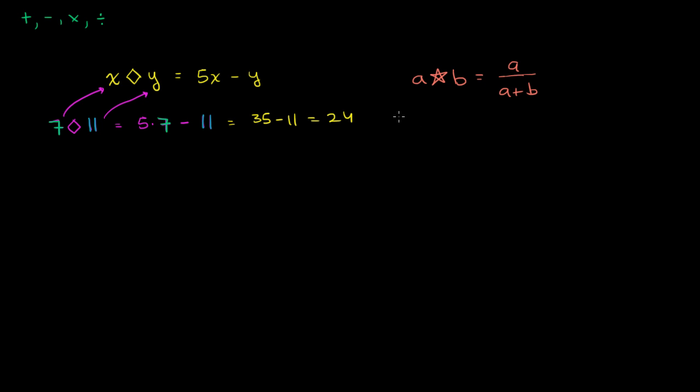Same idea. What would 5 star 6 be? Well, you go back to the definition. By definition, every place where you see the a, you now replace with the 5. Every time you saw the b, you now replace with the 6. So this is going to be equal to 5 over 5 plus 6, which would be 5 over 11.